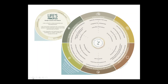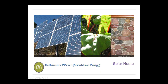There are 26 total life's principles, and today we'll go through the six main ones. Overall, we're looking at creating conditions conducive to life. The six main life principles are: resource-efficient material and energy; use life-friendly chemistry; integrate development with growth; be locally attuned and responsive; adapt to changing conditions; and evolve to survive. Let's start with the first — be resource-efficient in materials and energy.